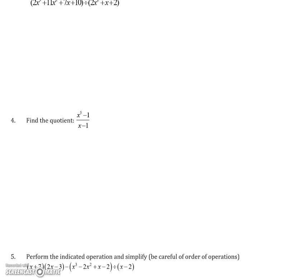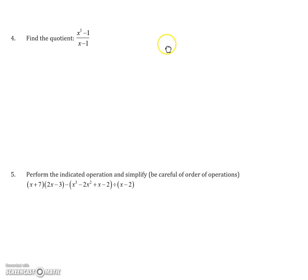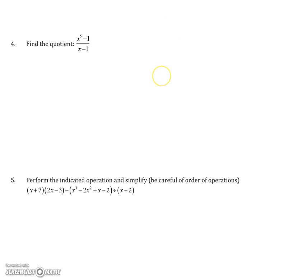So if I wanted to do another example, say I wanted to do number 4 where I want to find the quotient of x to the 5th minus 1 divided by x minus 1. I'm going to start with looking at the dividend and the divisor. So the divisor, again, tells me the number of rows. So it's always going to be 1 more than the degree of it. So I have x minus 1. So that's going to be 1 plus 1 that gives me 2.